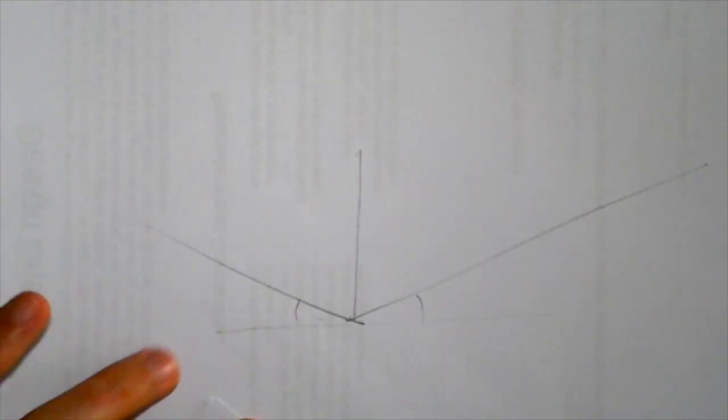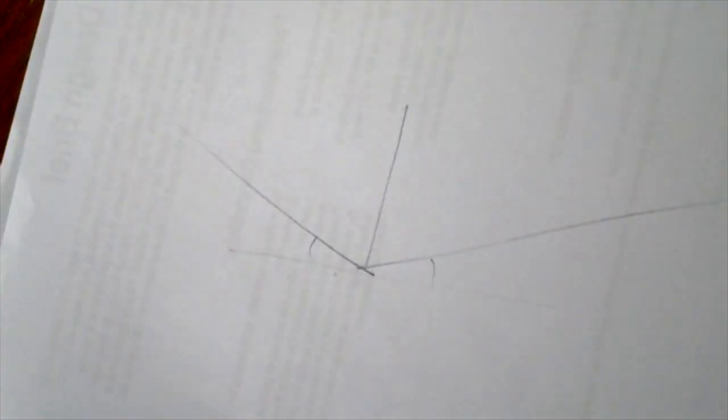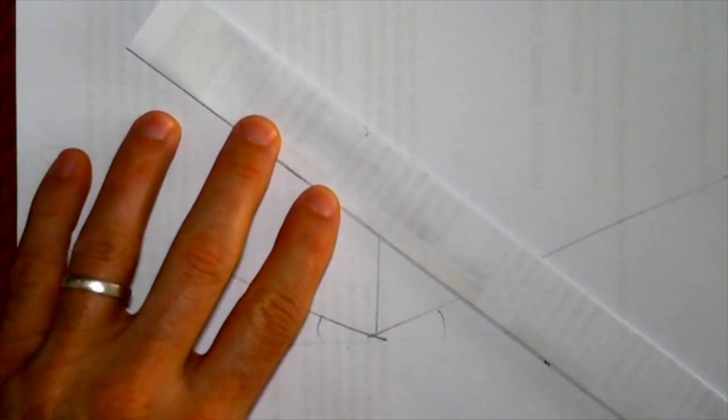So here we have A4 paper, we're going to fold it in half, and then fold it in half again. It is important that we make sure that the corners do line up, otherwise it's not going to work. And we're going to fold corner to corner again, and one last time. So we should end up with a homemade ruler.